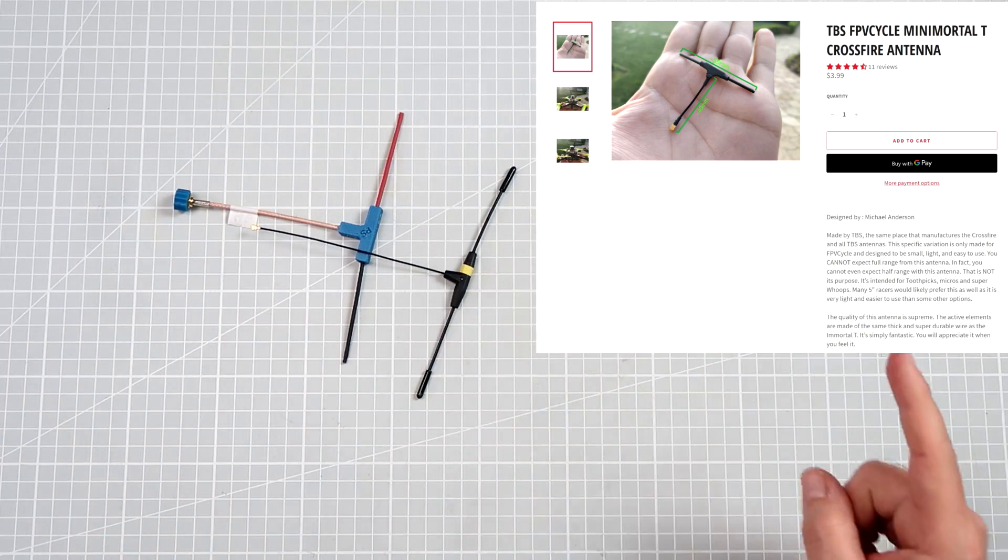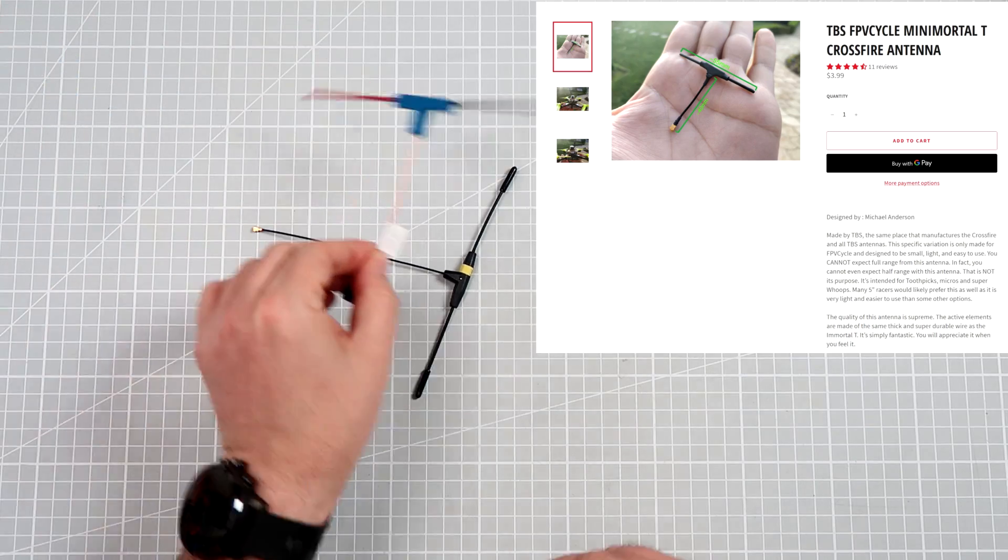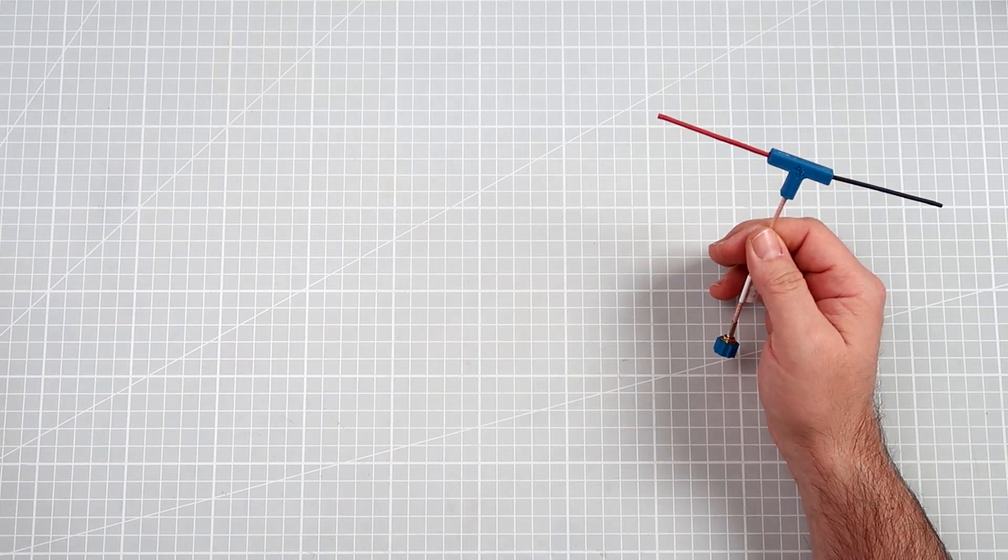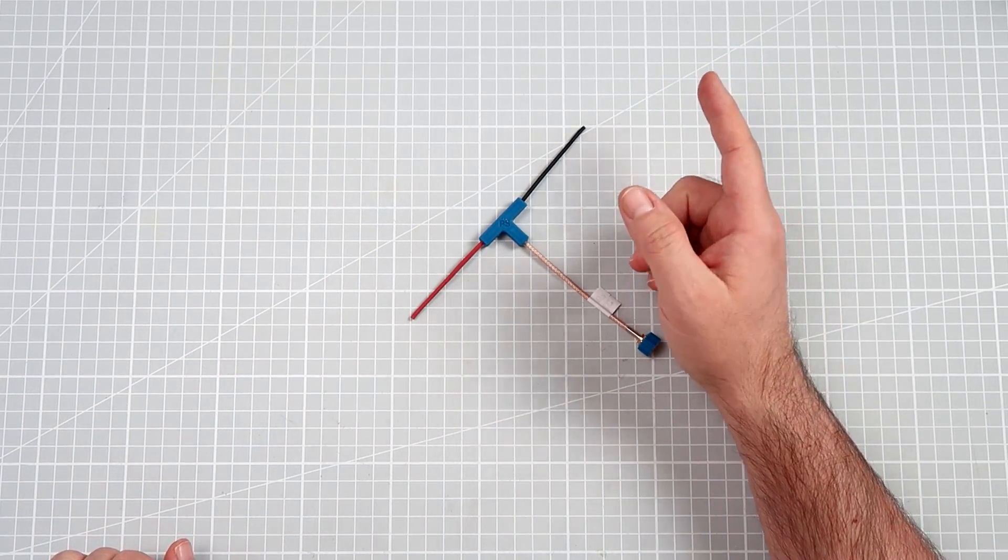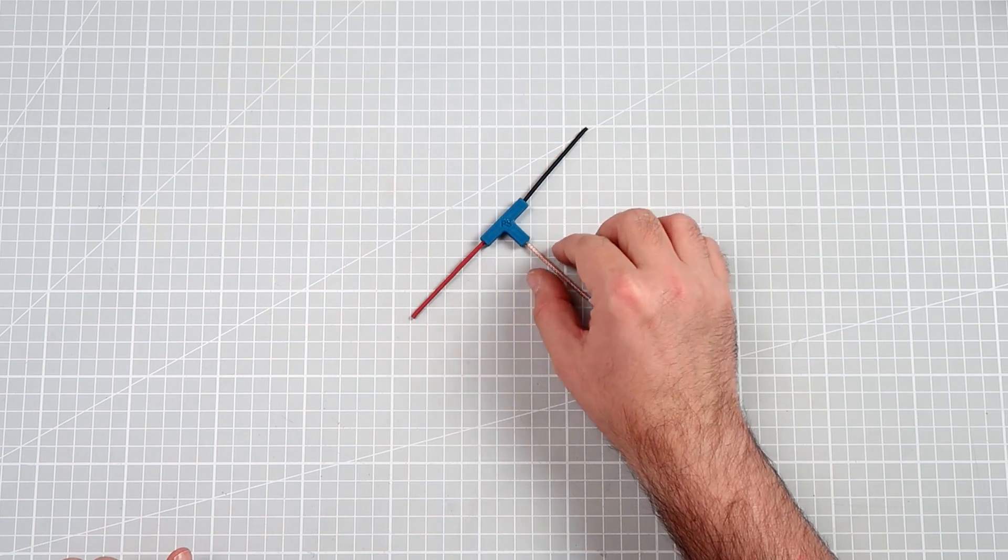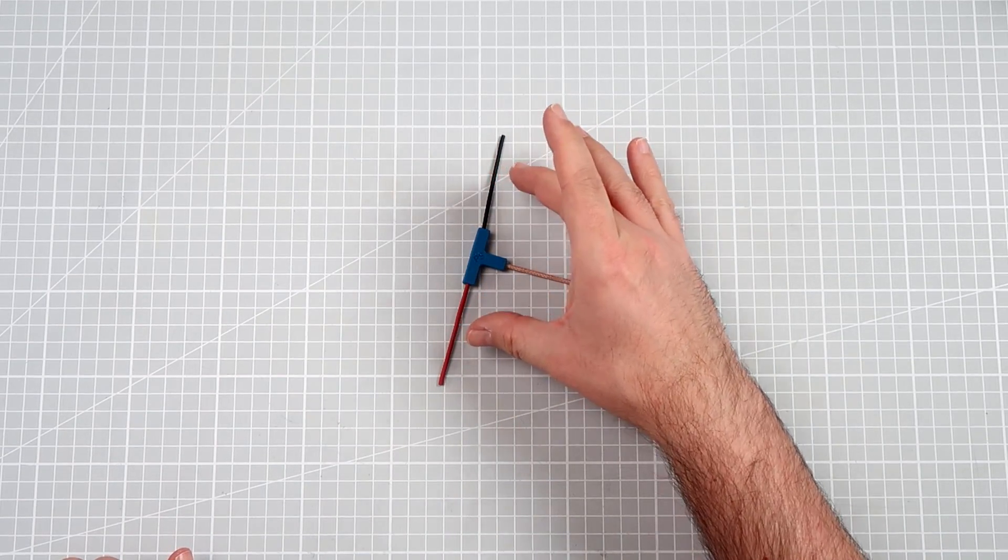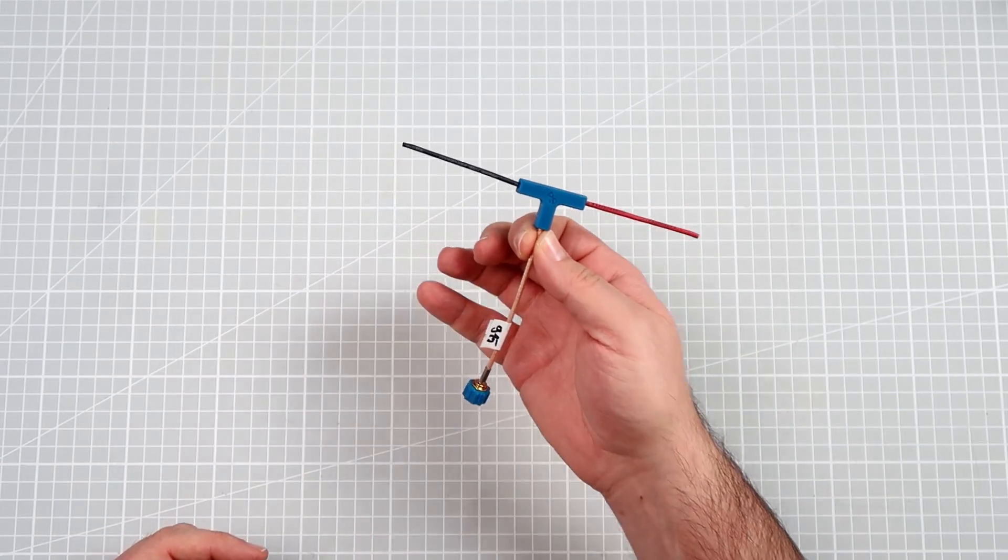But the question is, can you make a Mini Immortal T from a regular length antenna? Because I've been contacted by actually three persons so far with the question: is it possible to shorten the full length antenna to make it a Mini Immortal T at home?